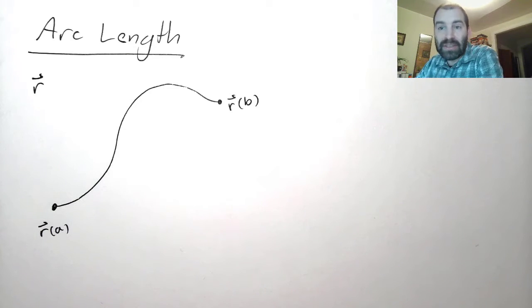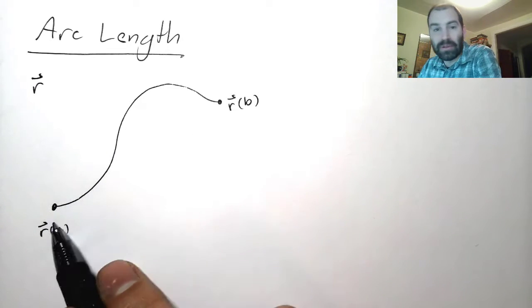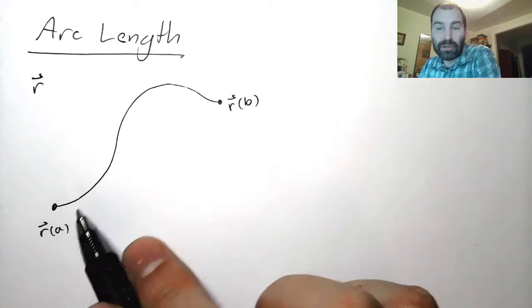Well, we talked about one way to do this is to break it up into little pieces. I can't use a ruler to measure the length of this whole thing, because my ruler is straight, and this is not.